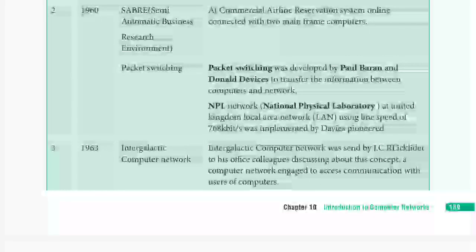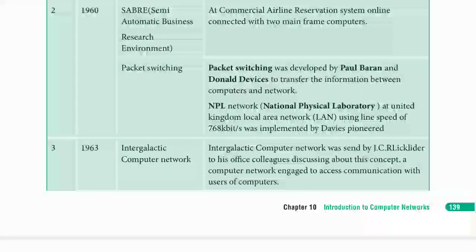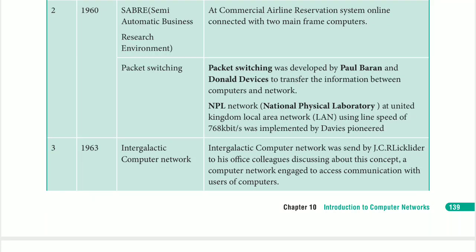In 1963, the concept of an intergalactic computer network was proposed by JCR Licklider. He sent a memo to his college office discussing the concept of a computer network that could be accessed to facilitate communication among computer users — proposing the idea that a network could be created so that information could be shared between computers.